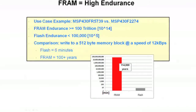As for endurance, using the same two parts: FRAM endurance is greater than 100 trillion writes, while flash endurance is typically around 100,000. As a comparison, if you write to a 512-byte memory block at 12 kilobytes per second, with flash you would exhaust that block in about 6 minutes. For FRAM, it would take over 100 years.